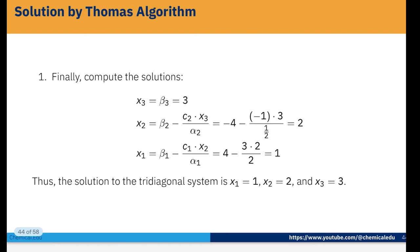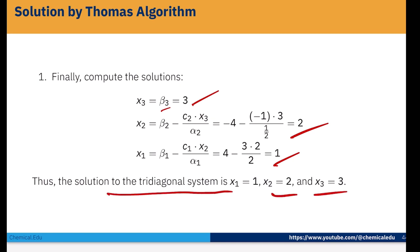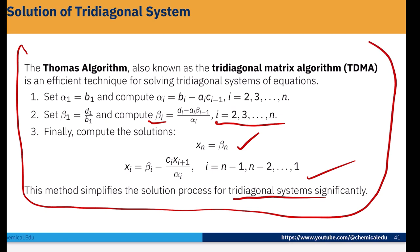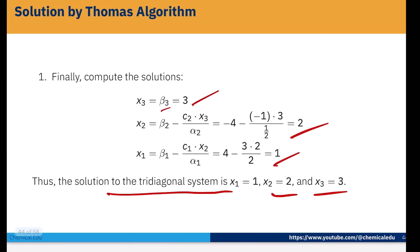Now that we have all the values, we can compute the unknown variables. x3 = beta_3 = 3. x2 = beta_2 minus (c2 × x3) / alpha_2, which gives x2 = 2. x1 = beta_1 minus (c1 × x2) / alpha_1 = 4 minus (3 × 2) / 2 = 1. So the solution of the tri-diagonal system is x1 = 1, x2 = 2, x3 = 3. Based on this algorithm, we can solve any tri-diagonal system.